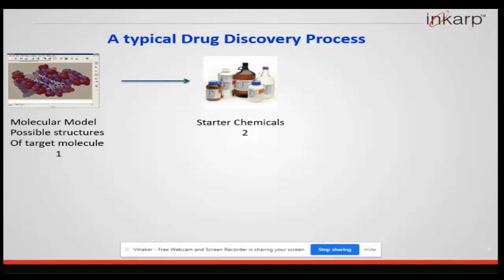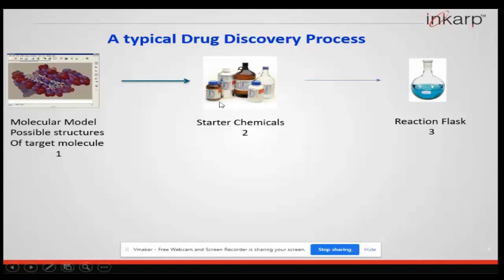Secondly, once we decide on the structure of the molecules, we start synthesizing it. When we start synthesizing the molecule, we need starting chemicals, then we start the reaction process. We will most likely prefer to start with a flask at an R&D level. We take the respective chemicals — let us say A and B as starting materials — and we have designed some structure of the molecule, C, considered as the product.